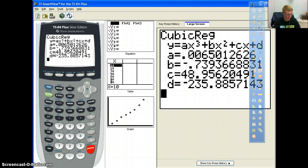It says we have y equals 0.00650 x to the third, minus 0.73936, and you can cut that off wherever, x squared, plus 48.9562x, plus etc. So what we're going to do now, as our next step, is to take our new equation, now that we've put a in for a, b in for b, c in for c, d in for d, we're going to actually put that in as our equation.